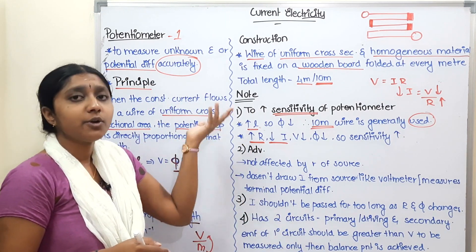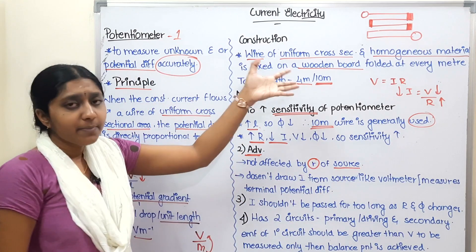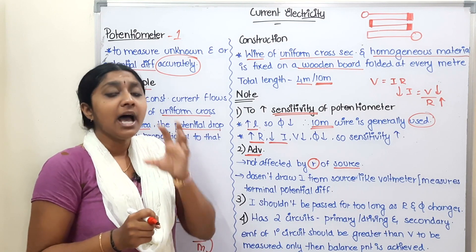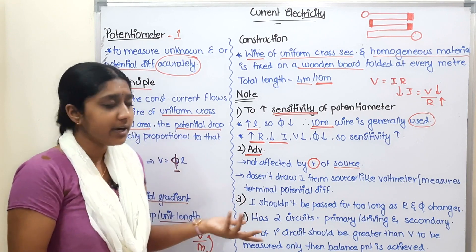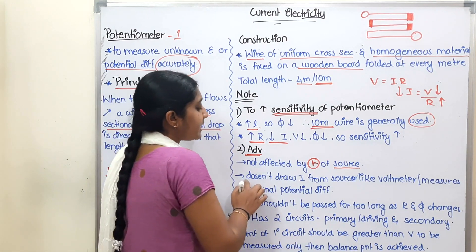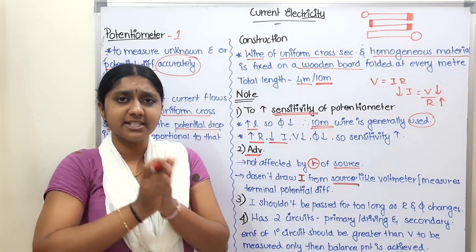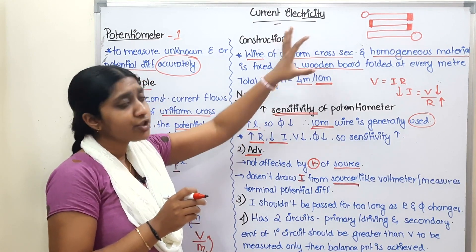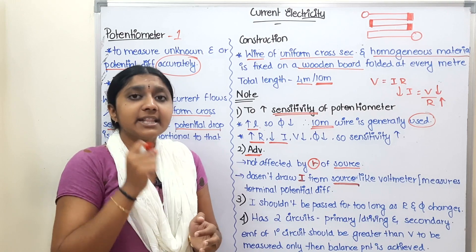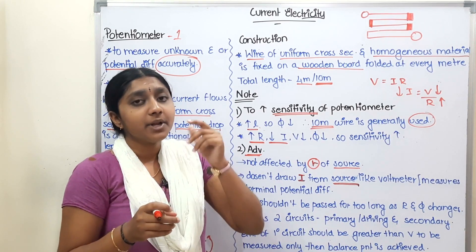Why do we use a potentiometer over a voltmeter? The first advantage is that the potentiometer is not affected by the internal resistance of the source. When a voltmeter draws current from the battery, the internal resistance causes a voltage drop and the readings are affected. The potentiometer avoids this issue.